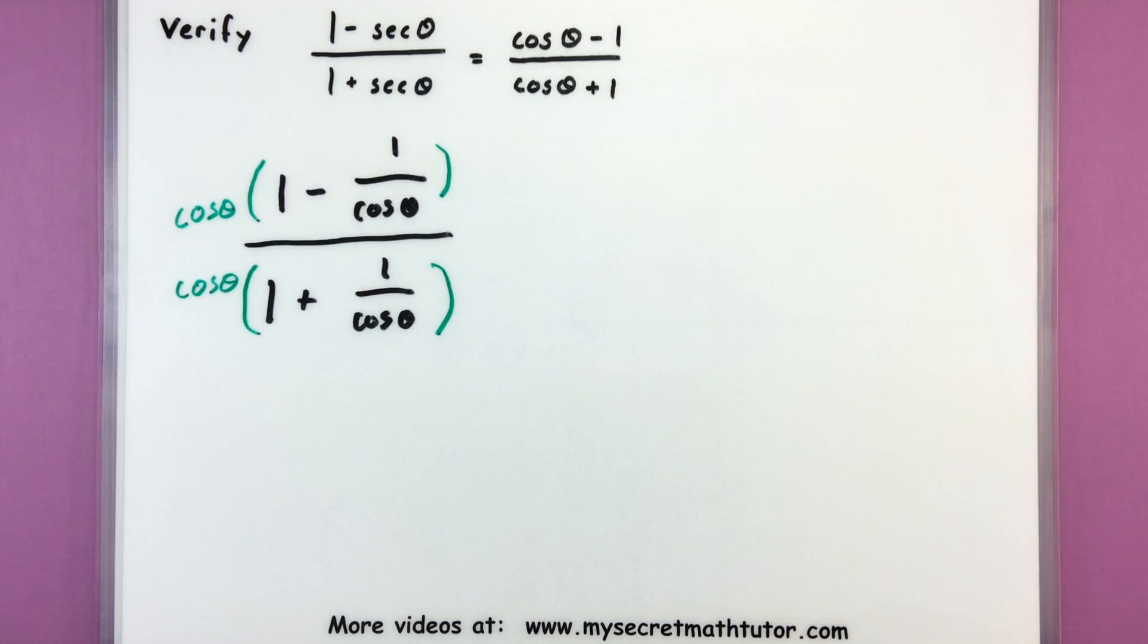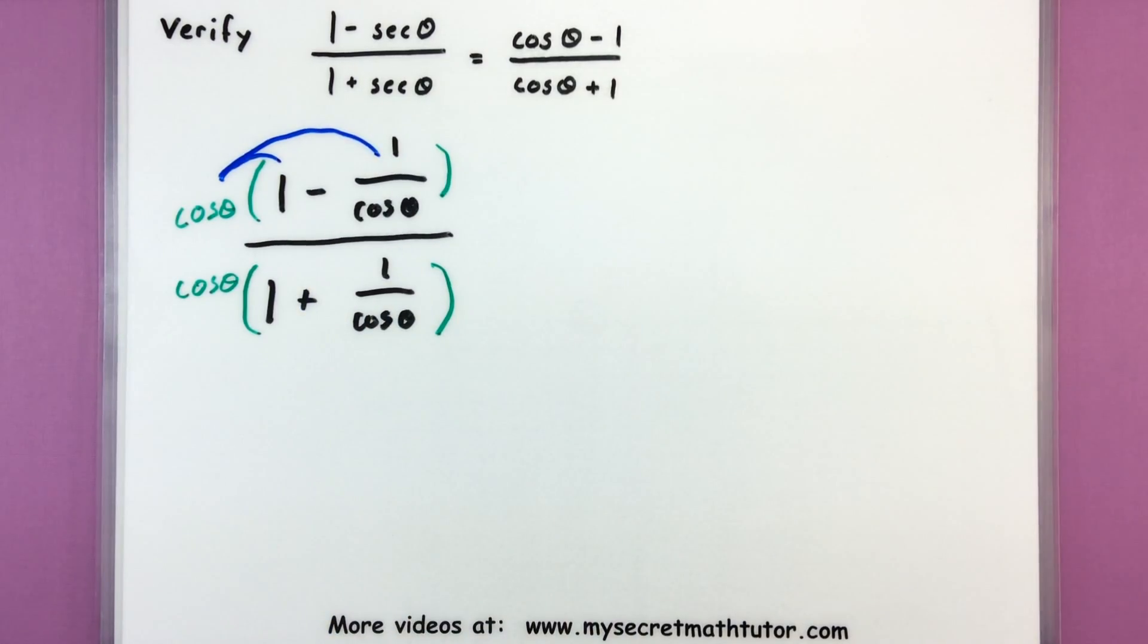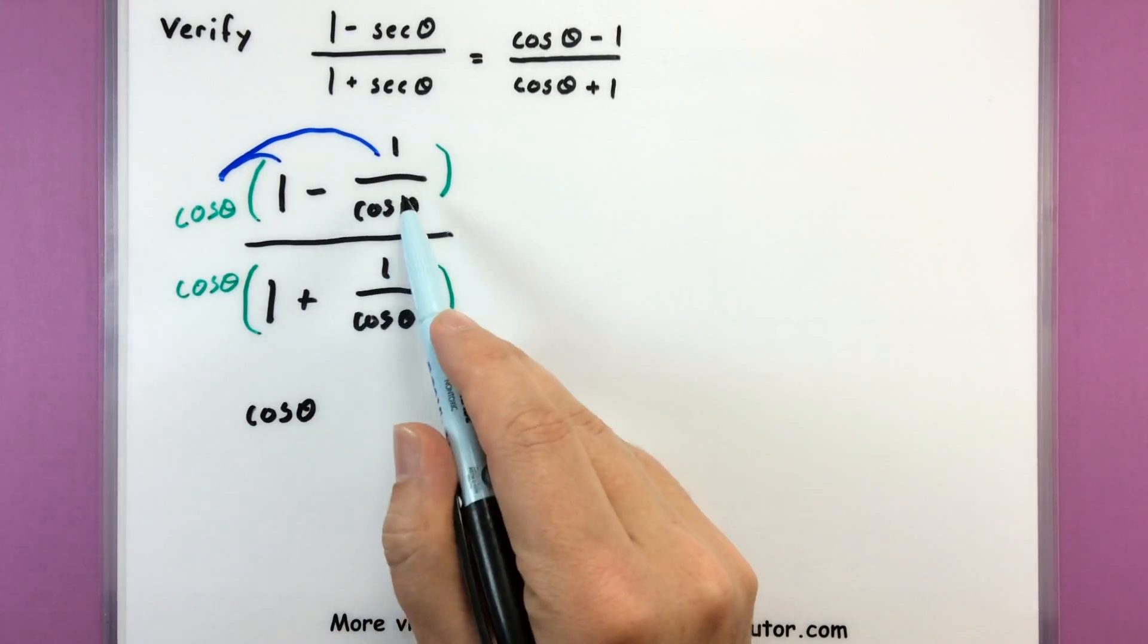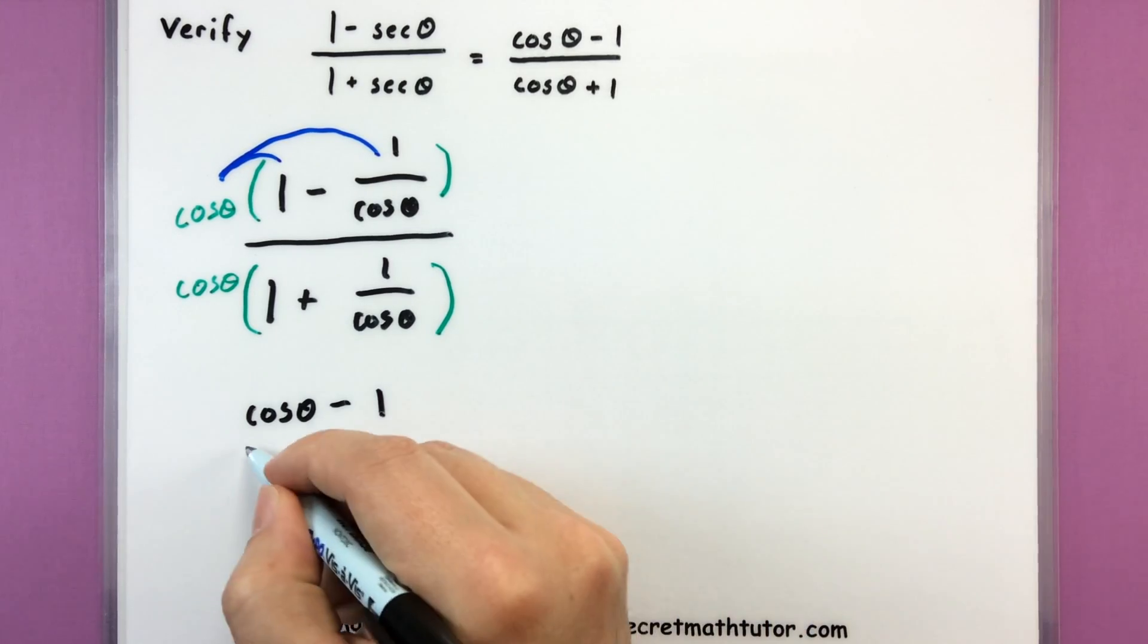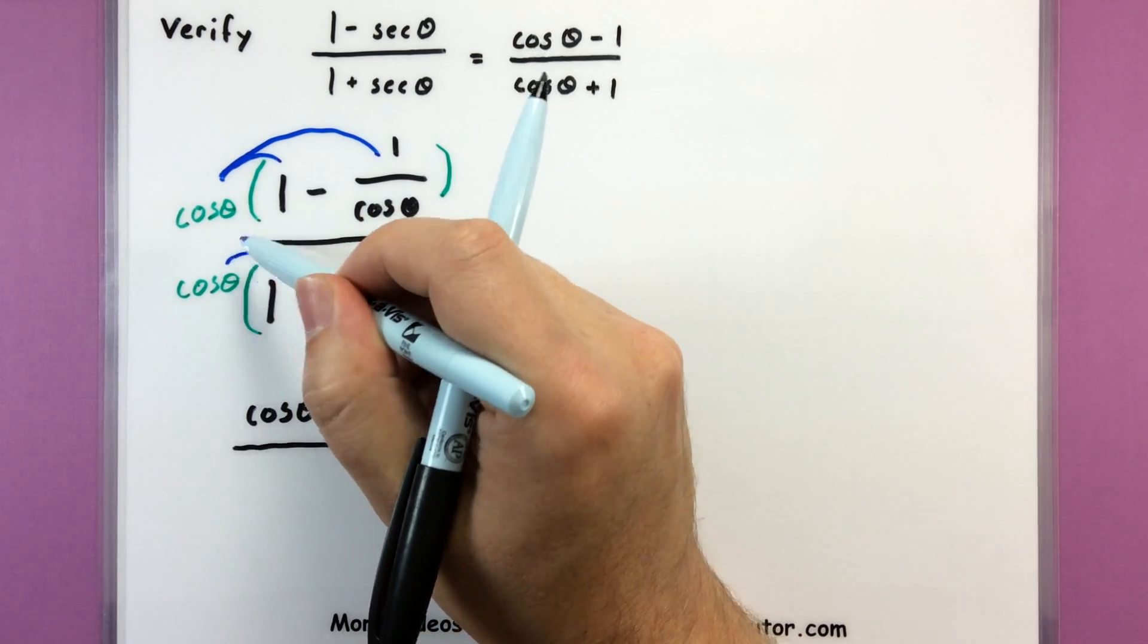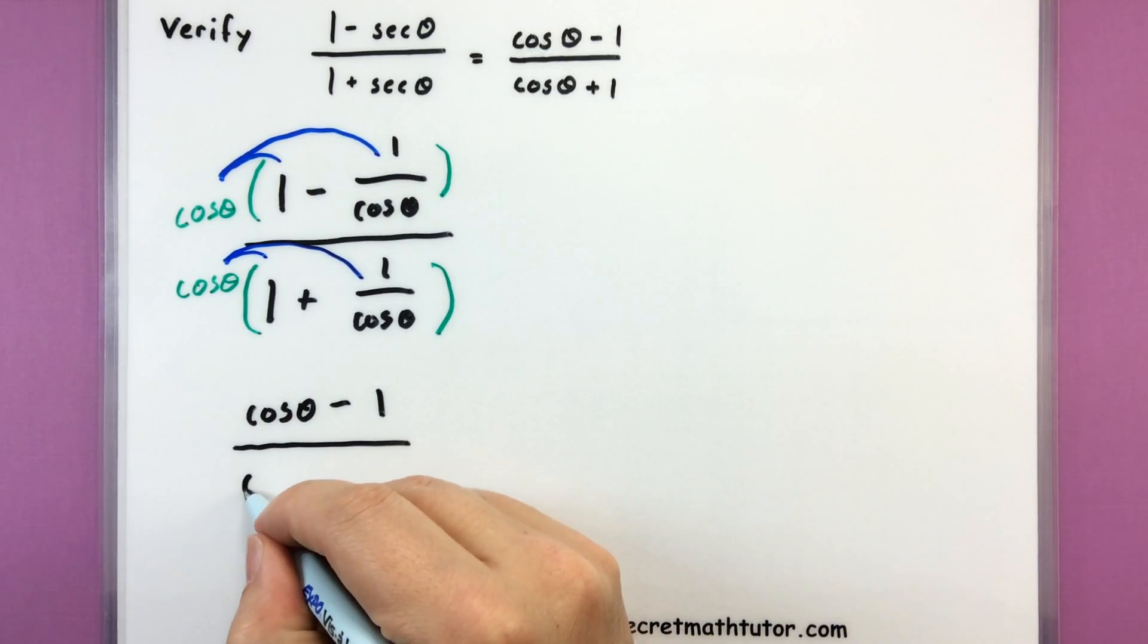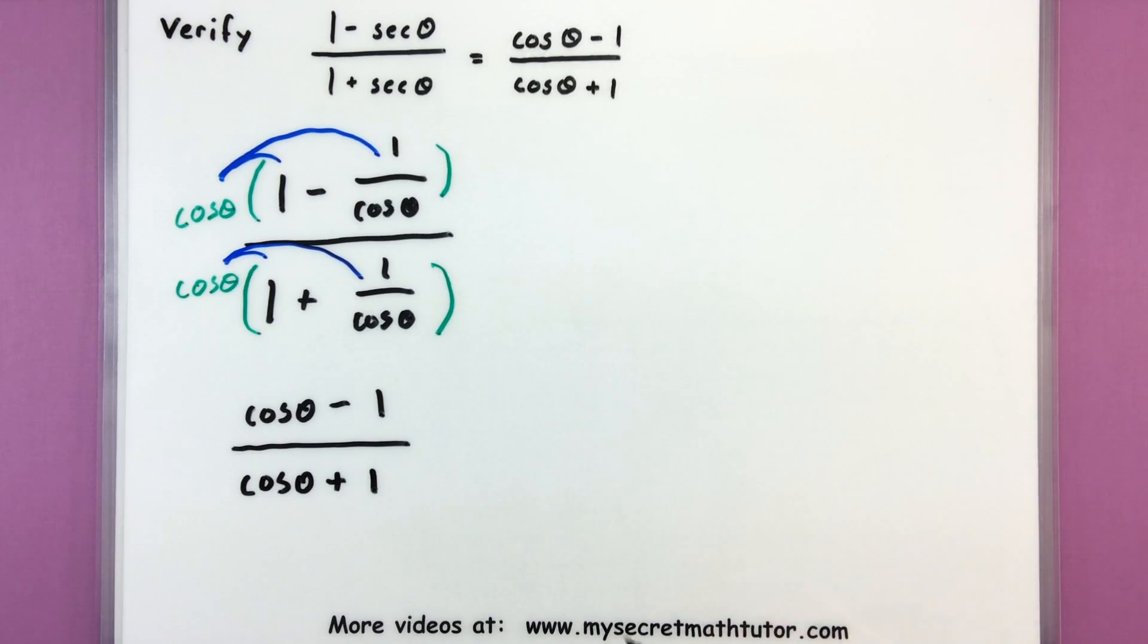So let's carefully go through this to make sure we haven't lost anything. So on the top we're just going to distribute our cosine to both parts. That'll give us cosine of theta and then cosine will multiply over here. It'll be cosine of theta divided by cosine of theta so that's just 1. And now we want to repeat this process with the bottom. So this bottom cosine is distributing to both of those parts. So cosine of theta plus 1.